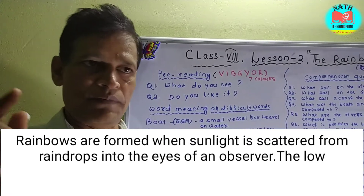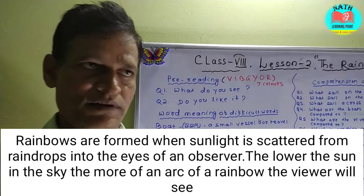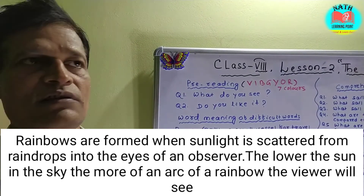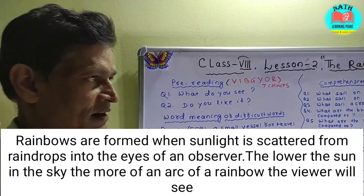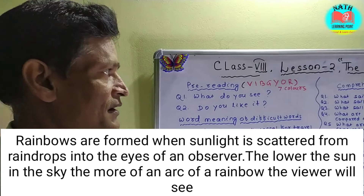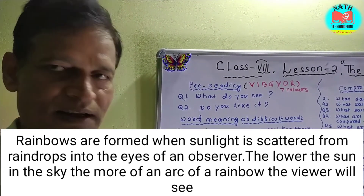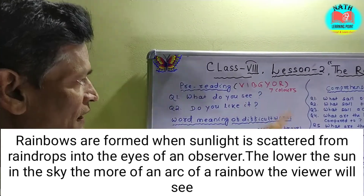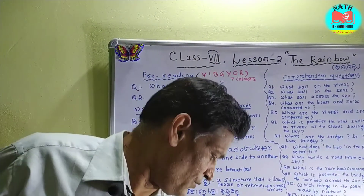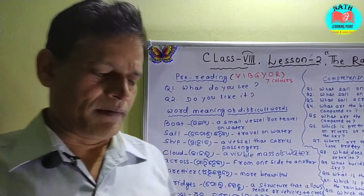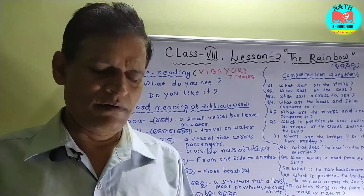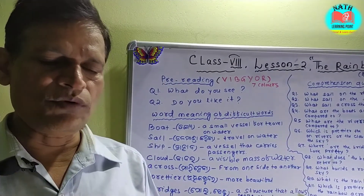When the rain falls on one side of the sky and on the other side the sun rises, the sun gives light. At that time you can see the rainbow. First of all, we will read the poem. You close your book and listen to the poem and follow me.